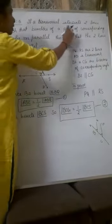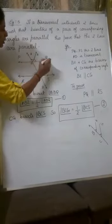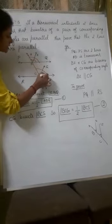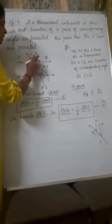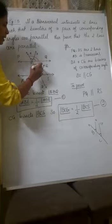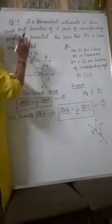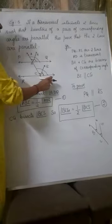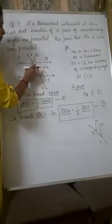Now, in this question, one pair of corresponding angles is given — specifically, the bisectors of a pair of corresponding angles are parallel. Angles ABQ and BCS are these two corresponding angles. BE is the bisector of one corresponding angle, and CG is the bisector of the other. It is given that these two bisectors are parallel, and you have to prove that the original lines PQ and RS are parallel to each other. So, we have drawn the shape like this.